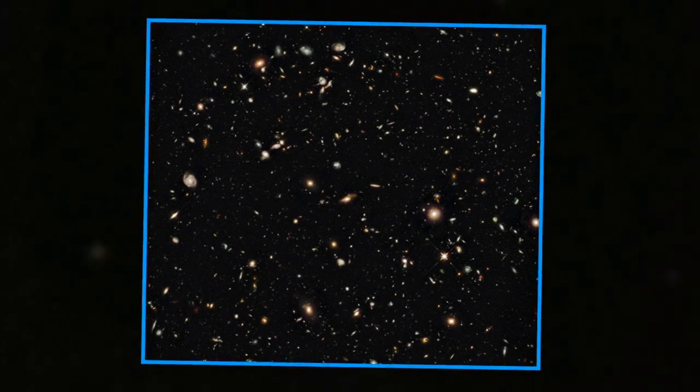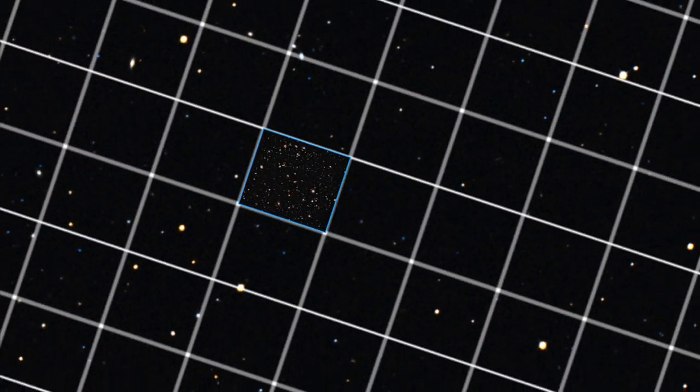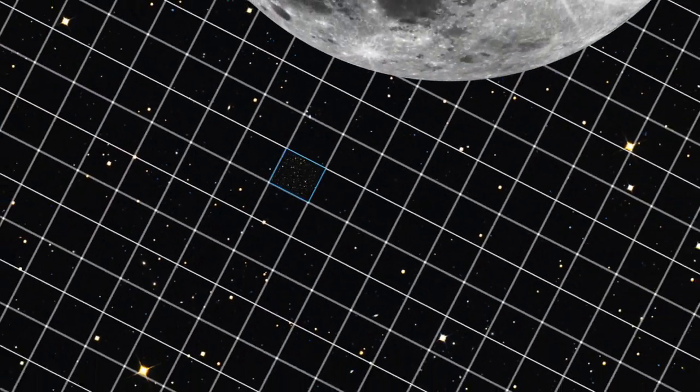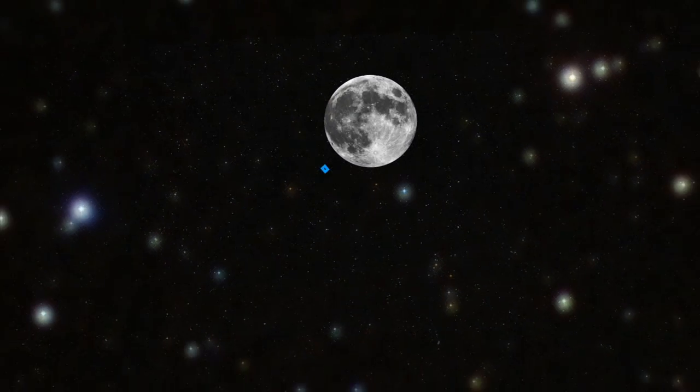What's also incredible is the realization that this small slice of the universe is just that, a slice. Multiply this by 30 million, and you get an idea of just how many galaxies are out there.